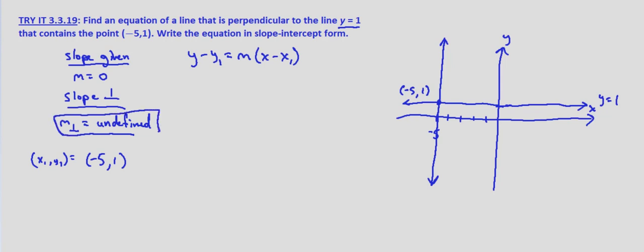So what we need to fall back on is similar to what I described in the last part of the try it exercise where we were given a vertical line. Anytime we're given a horizontal line and we're asked to find the equation of a line perpendicular to it through a specific point, it's going to be, in this case, our x coordinate.